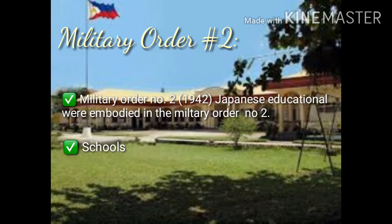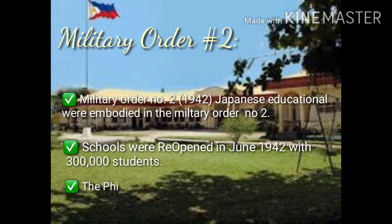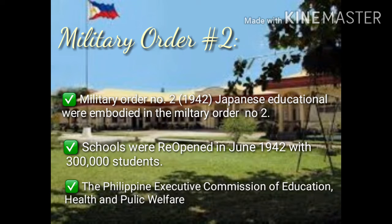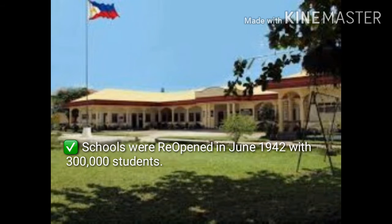Military Order No. 2 in 1942 — Japanese educational policies were embodied in Military Order No. 2. Schools were reopened in June 1942 with 3,000 students. This was under the Philippine Executive Commission of Education, Health and Public Welfare.